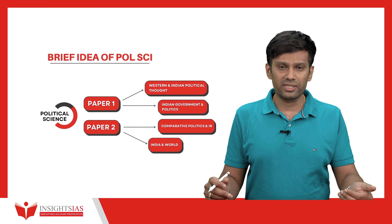Why should one opt for political science? First, it is a very interesting subject — you do not get bored reading it. Second, the concepts are easy to grasp and not complicated. Third, it is very easy to connect to current events. In an optional subject, scores increase when you bring unique dimensions, which requires linking to current examples. Political science connects naturally to current events — for example, the farm bill issue, Hindi imposition controversy, or the NEET issue — all can be linked to political science theories.